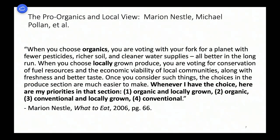Here's a pro-organics, pro-local quote from Marian Nestle and Michael Pollan: 'When you choose organics, you're voting with your fork for a planet with fewer pesticides, richer soil, and cleaner water supplies. When you choose locally grown produce, you're voting for conservation of fuel resources and economic viability of local communities, along with freshness and better taste.' Their priorities, in order, are: organic and locally grown, organic, conventional and locally grown, and then conventional.